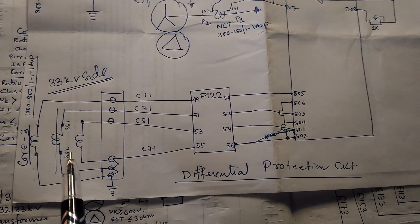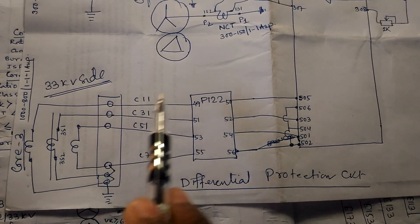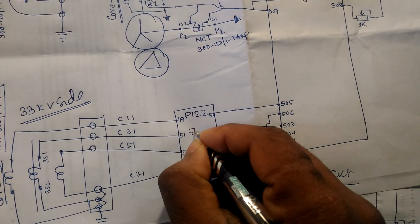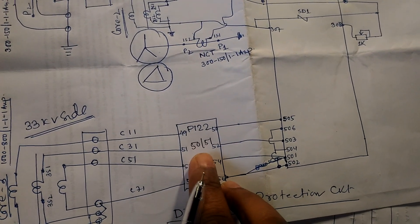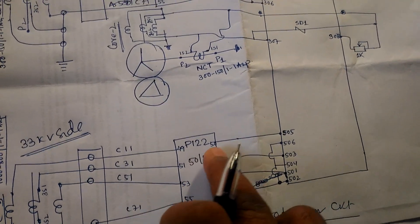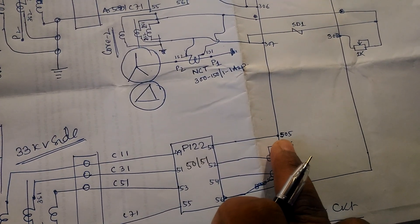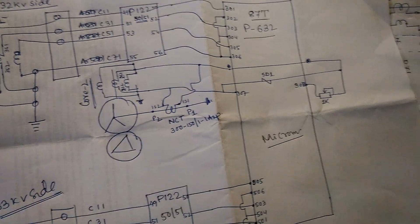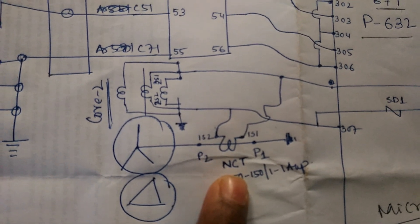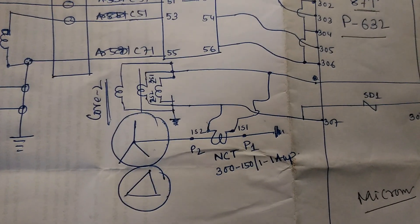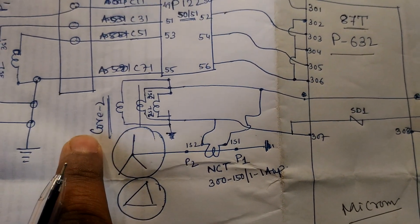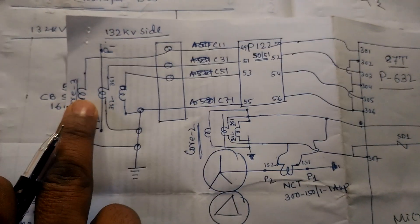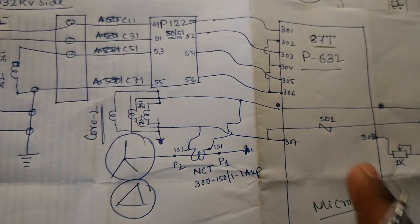The overcurrent and earth fault relay terminal is also connected to the 87-80 differential relay, as per this diagram. From the 33 kV side, the P122 relay (50/51) provides backup earth fault and overcurrent protection, and is also connected to the 87-80 relay. The transformer neutral CT is connected to core 2 of the main CT and then to the 87-80 relay. This completes the REF and differential protection circuit.